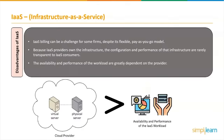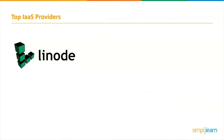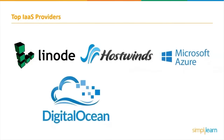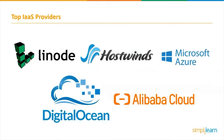The top IaaS providers are: Linode, a privately held cloud hosting firm based in the United States offering virtual private servers; Hostwinds, offering web hosting, cloud hosting, and dedicated server options; Microsoft Azure, a cloud computing service operated by Microsoft for application management via Microsoft-managed data centers; Digital Ocean, offering cloud services that make it easy to deploy and grow programs running on several machines simultaneously; and Alibaba Cloud, serving online businesses as well as Alibaba's own e-commerce ecosystem.